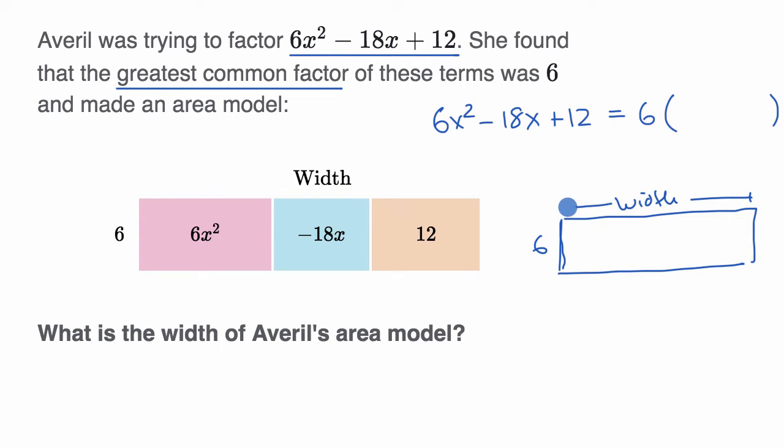So this is the width right over here. If you multiply 6 times the width, you multiply the height times the width, you're going to get the area. So imagine that the area of this rectangle was our original expression.